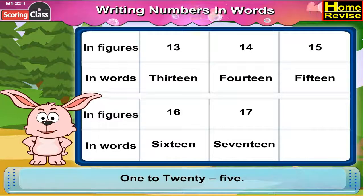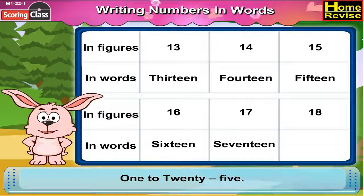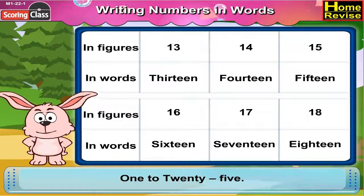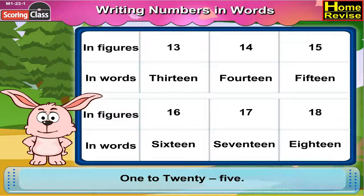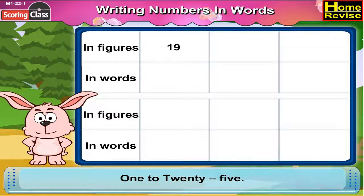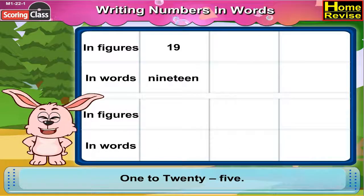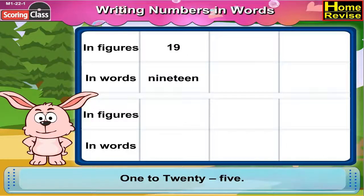18 in figure is 1, 8. 19 in figure is 1, 9. In words it is N, I, N, E, T, E, E, N.